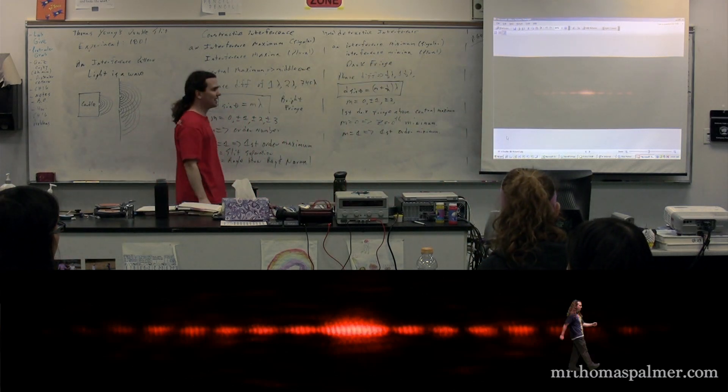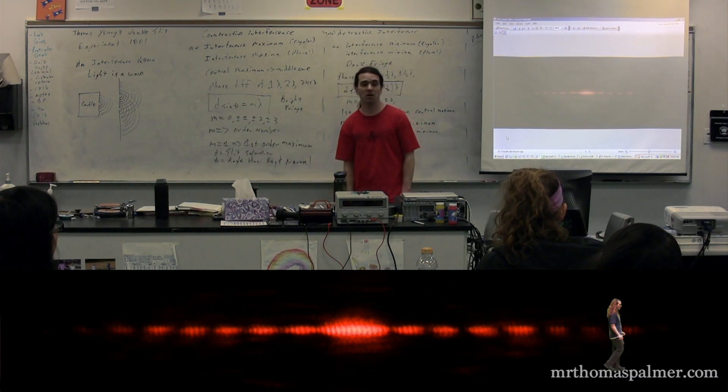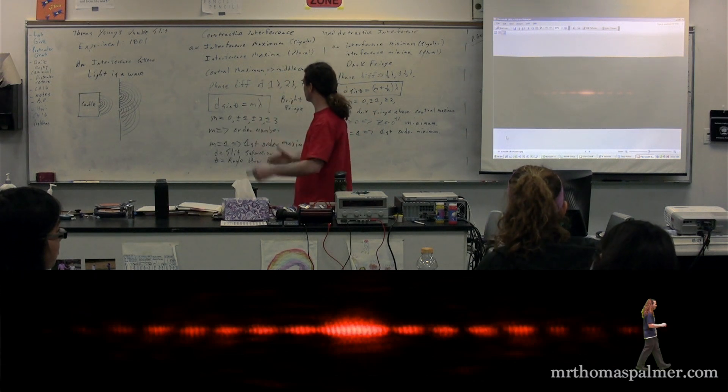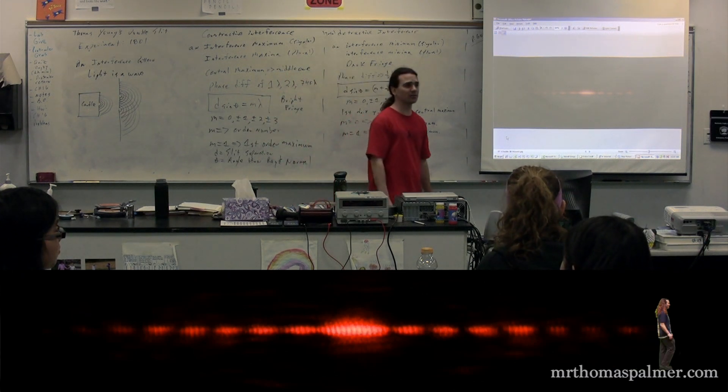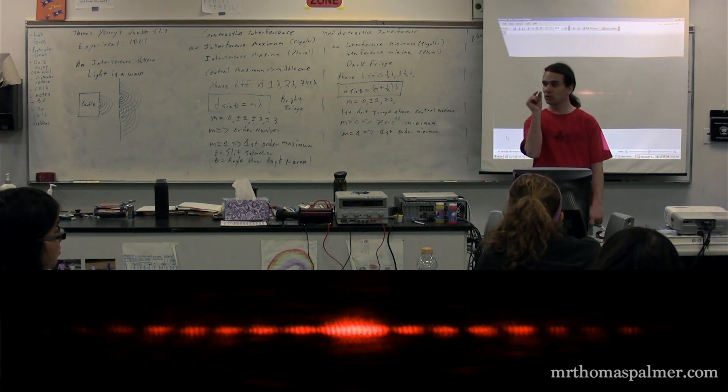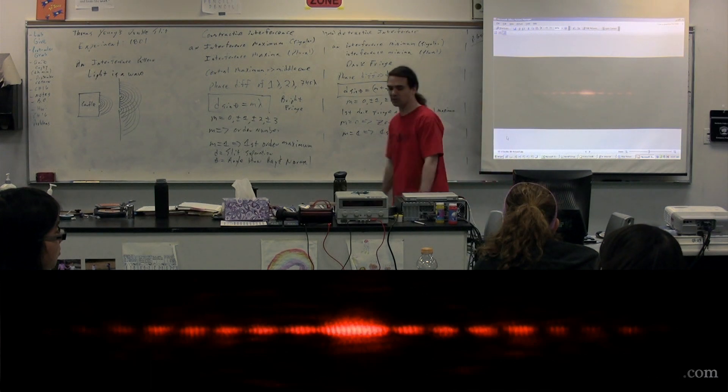On the board, the distance between the central maximum and the first order bright fringe was probably a centimeter. And the distance from the slits to the wall was maybe 3 meters. So do you see how that's going to be a small angle? It's going to be a pretty small angle. Well, that's okay. It just works out to be a small angle in this particular problem.